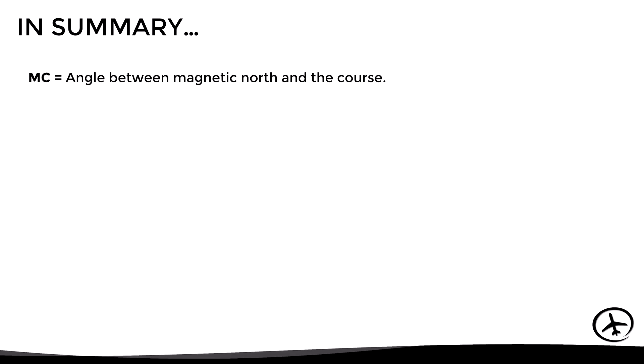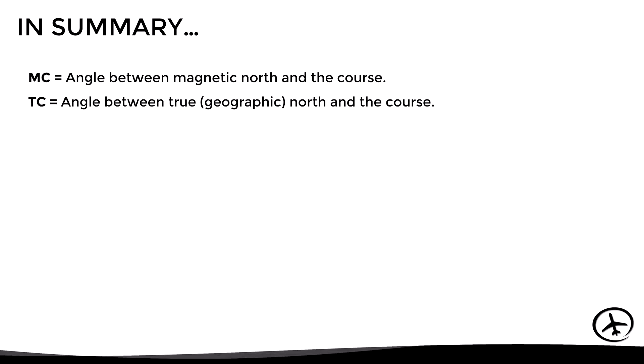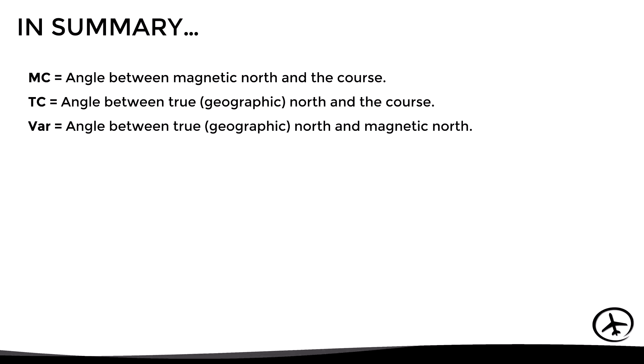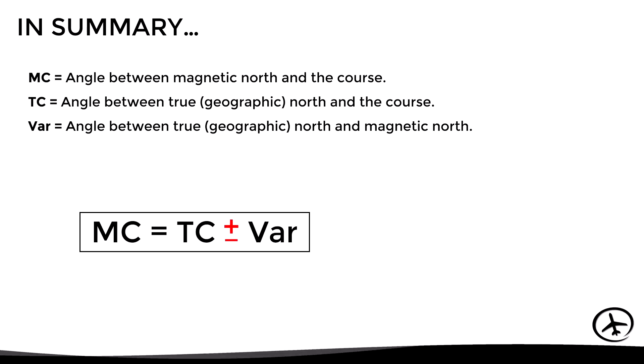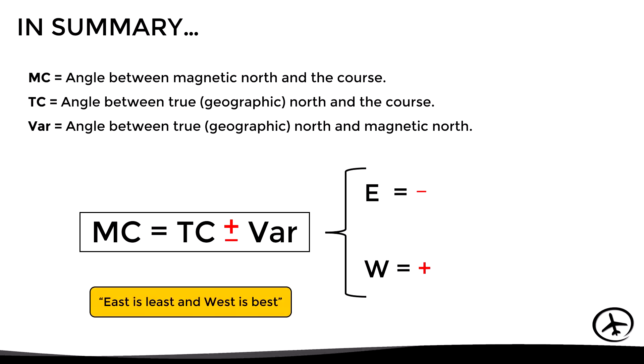In summary: the magnetic course is the angle between magnetic north and the course; the true course is the angle between true or geographic north and the course; and the magnetic variation is the angle between true north and magnetic north. Magnetic course equals true course plus or minus the variation depending on whether it is east or west. To remember this more easily we can use the phrase: east is least and west is best.